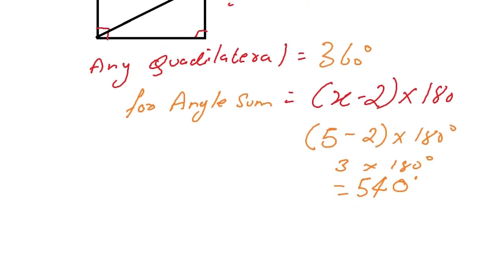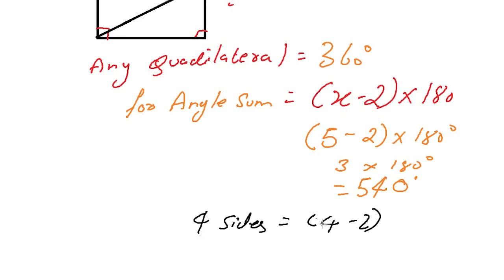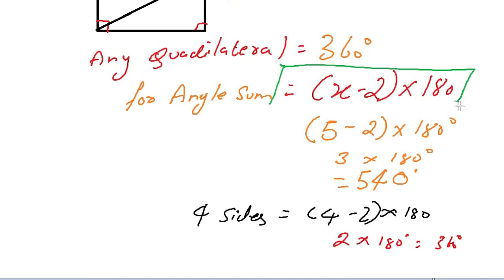Now let us verify this formula for a quadrilateral, which has four sides. Replacing the value of n with 4: 4 minus 2 equals 2, and 2 into 180 gives 360 degrees. This equation can be used to find the interior angle sum for any polygon by replacing n with the number of sides.